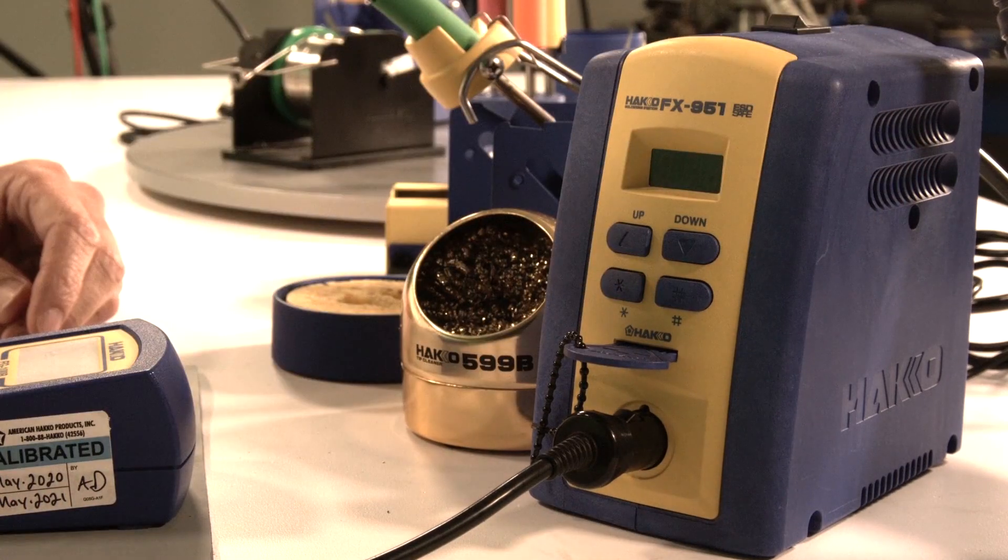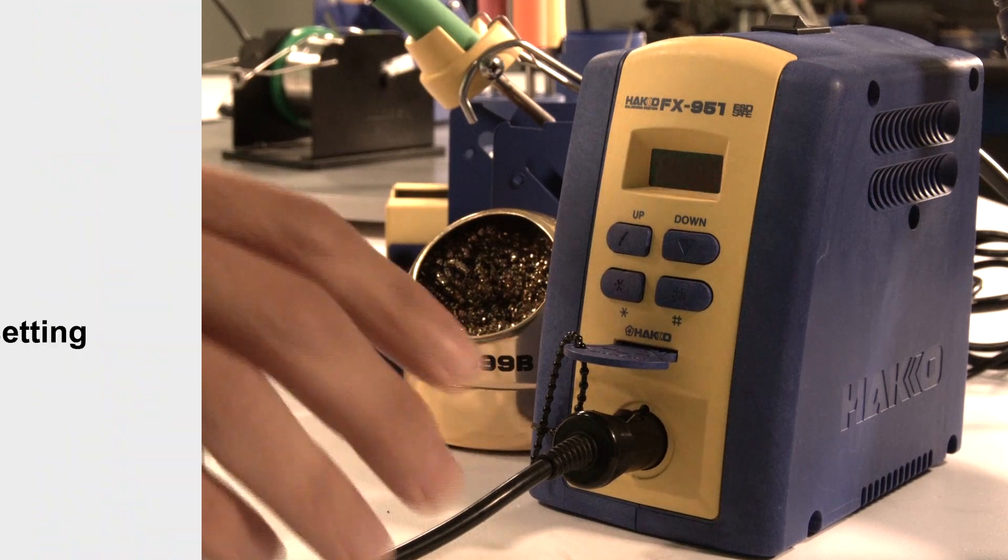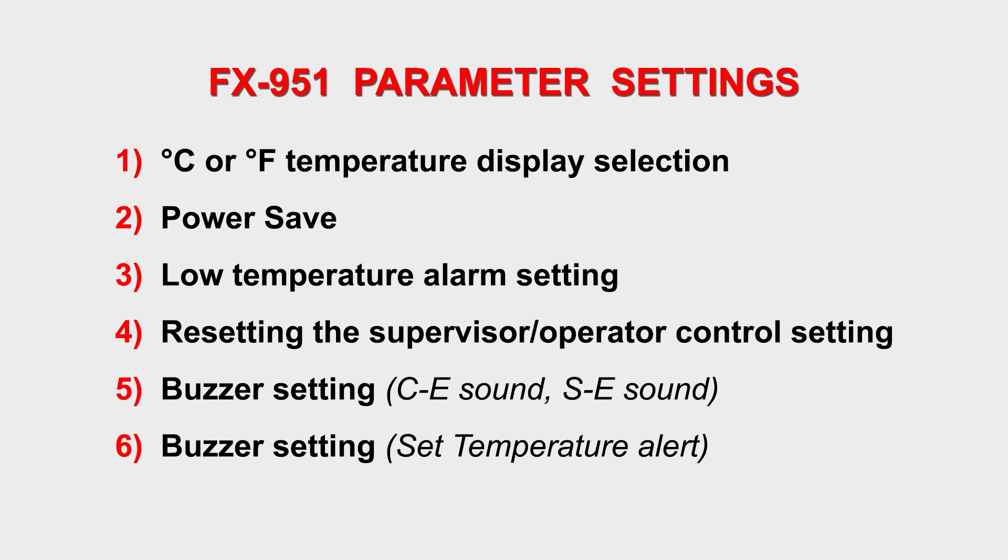Turn the station off and let's go over the system parameters. Within the system parameters, there are six additional controls you're able to access. One is changing your temperature display from Fahrenheit to Celsius. The second is changing your auto sleep time settings. The third is controlling your low temperature alarm. The fourth is changing your supervisor/operator input for offset settings. The fifth is turning on or off your buzzer alarms for errors. The last parameter is turning on or off your alarms for when your tip has reached its set temperature.